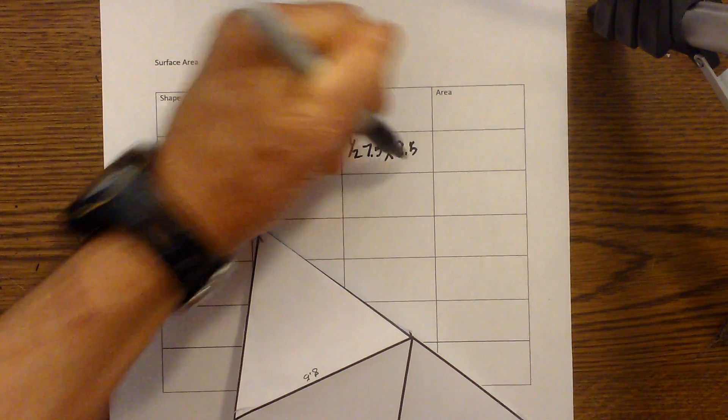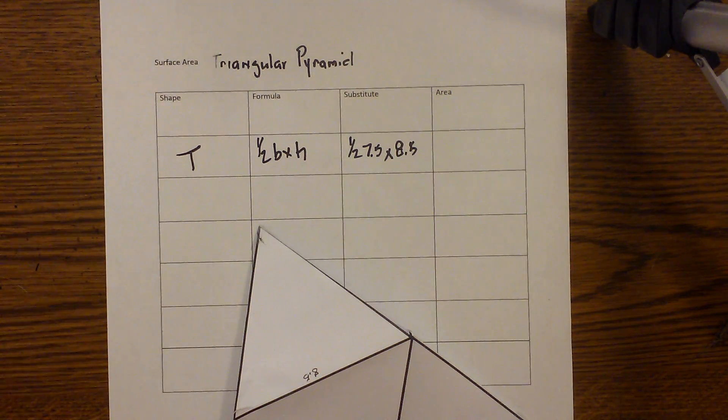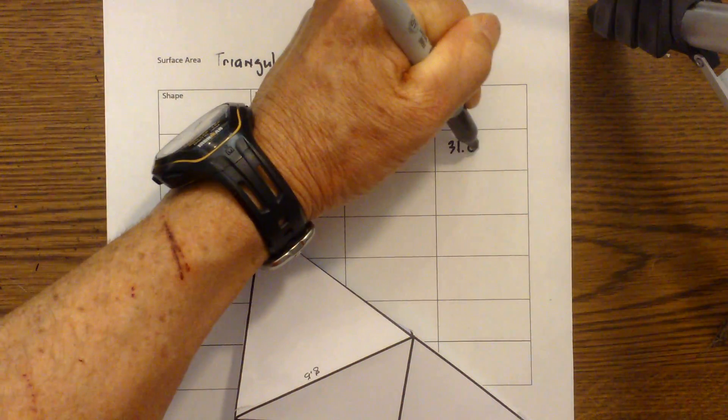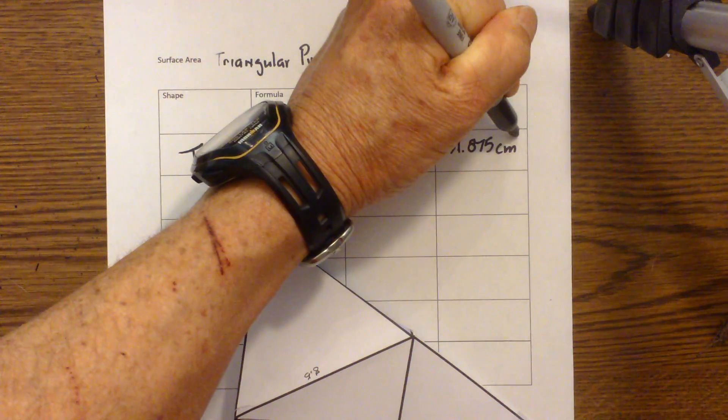I'm going to multiply these together. So I have 8.5 times 7.5, that equals 63.75, times one half equals 31.875. And I measured these in centimeters, so area is centimeters squared.